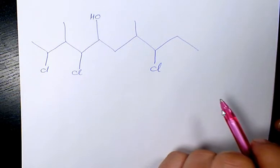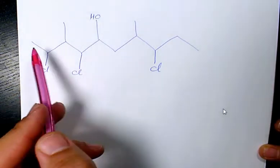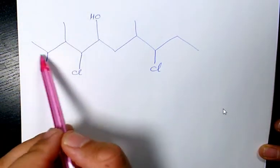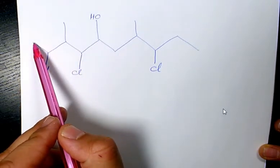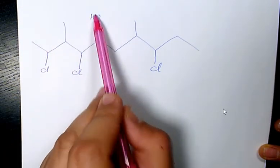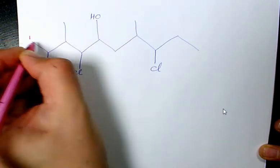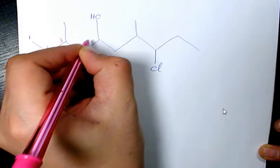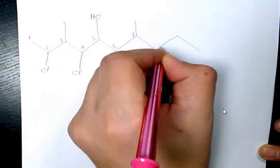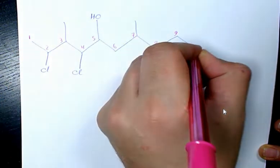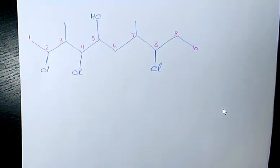If you want to start numbering, we need to start from this side because hydroxyl group gets the smallest number. When we start numbering from here: 1, 2, 3, 4, 5, 6, 7, 8, 9, and 10. Then we start naming this.